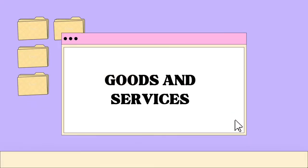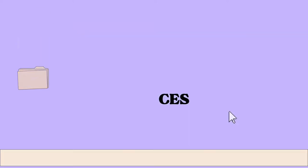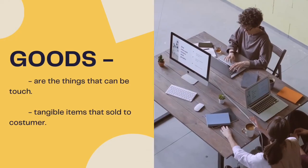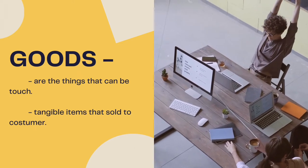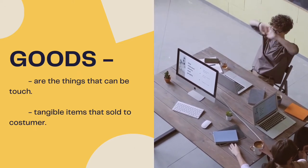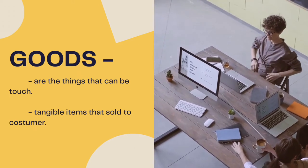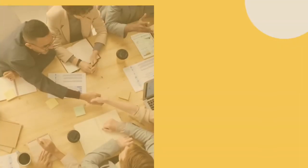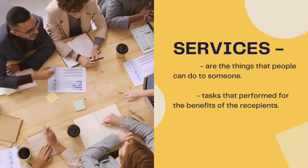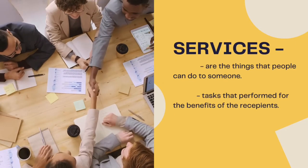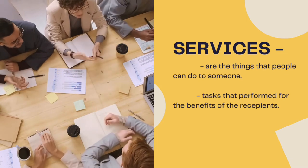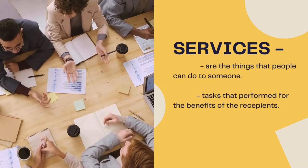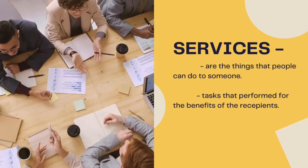What are Goods and Services, to be able to have quality distribution? Goods are things that can be touched, or tangible items sold to the consumer. While services are the things people do for someone else, or a task performed for the benefit of the recipient.